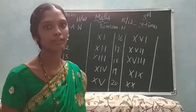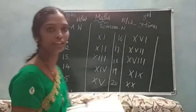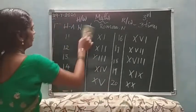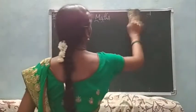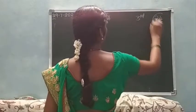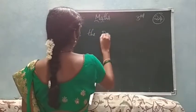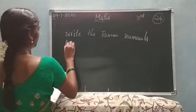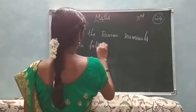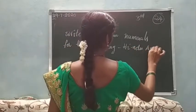Today I will explain to you only 20 numbers, then I will give you some exercise. Tomorrow onwards, this is homework also. First of all, I will write some numbers. Ok children, write down: 'Write the Roman numerals' - W-R-I-T-E T-H-E R-O-M-A-N N-U-M-E-R-A-L-S - some common numerals. Write down the following Hindu-Arabic numerals.